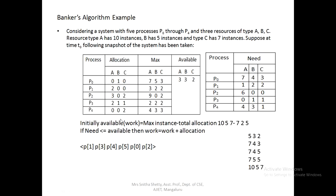After skipping P2, we pick the next process P3. Need of P3 is 0,1,1. Is 0,1,1 ≤ 5,3,2? Yes. So we update work = 5,3,2 + allocation of P3 (2,1,1) = 7,4,3. The available matrix is updated to 7,4,3. P3 is allowed to execute after P1.